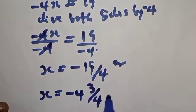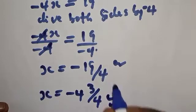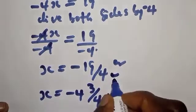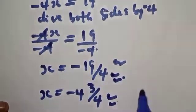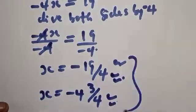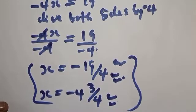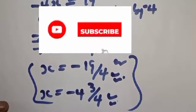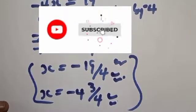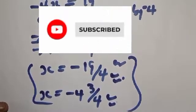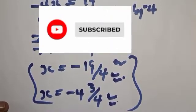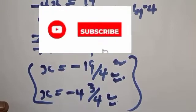So x equals minus 19 over 4 — that is our final answer. Please don't forget to like, share, comment and subscribe. Thank you.